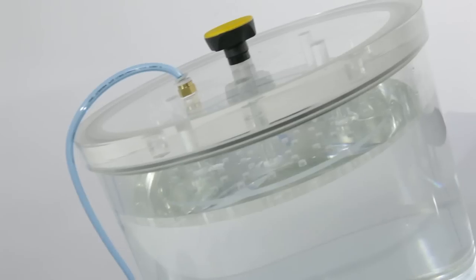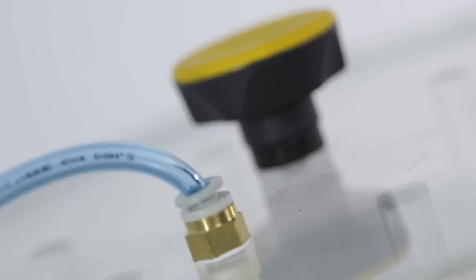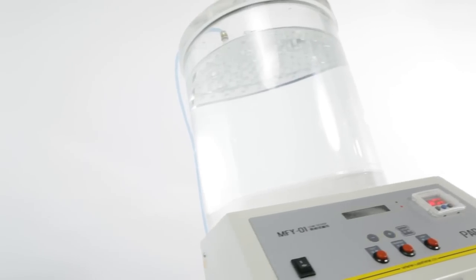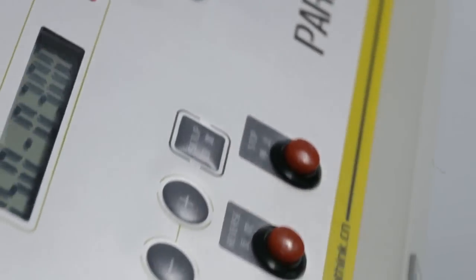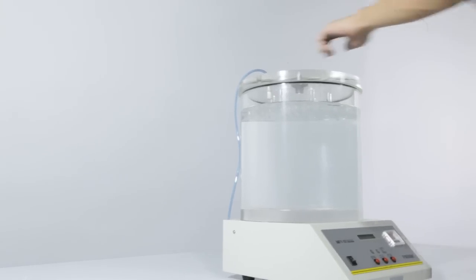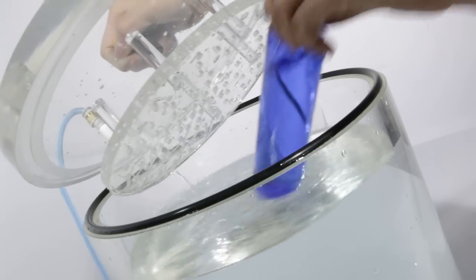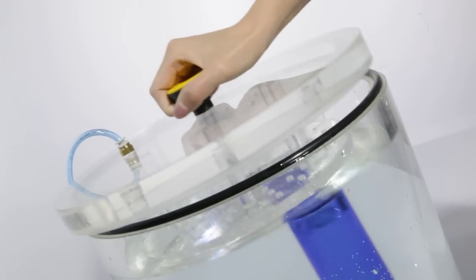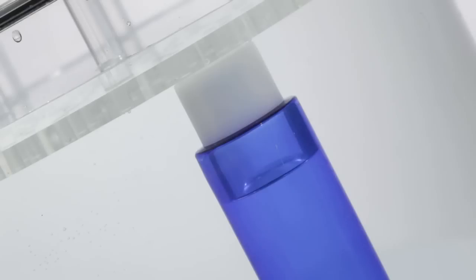Test termination and air back flush functions make the entire testing process totally automatic and reliable. MFY-01 works by creating a vacuum in the test chamber to create a pressure difference between the inside and the outside of the specimen.